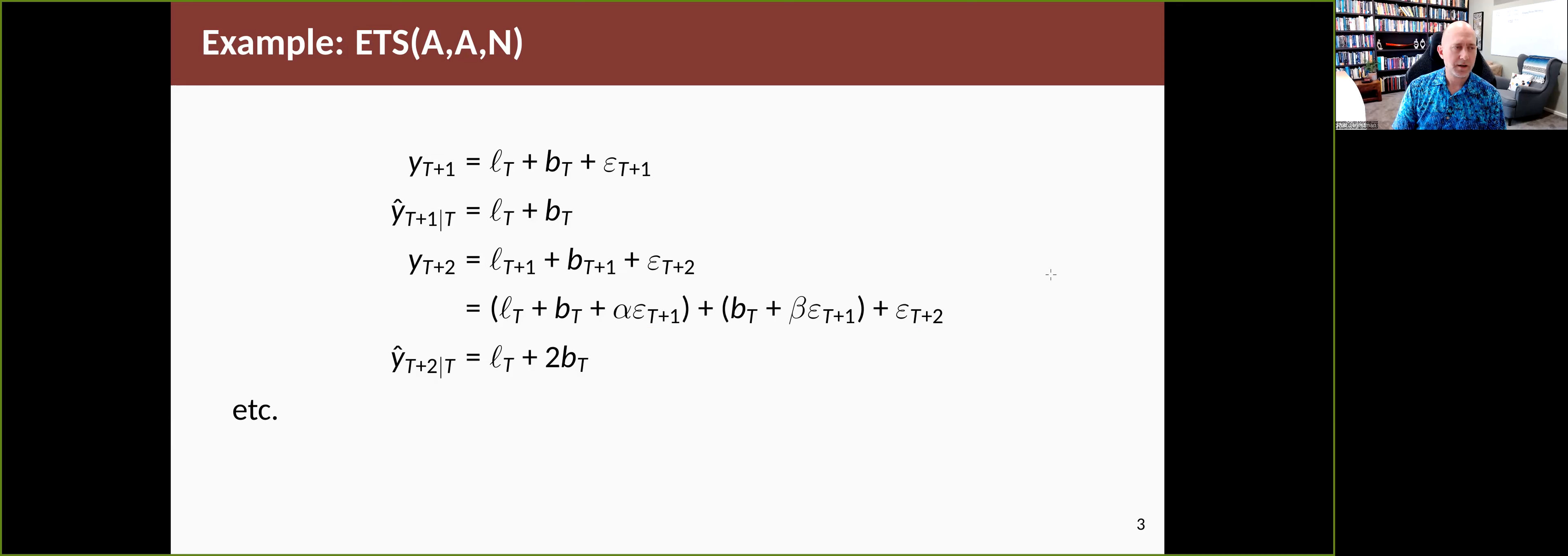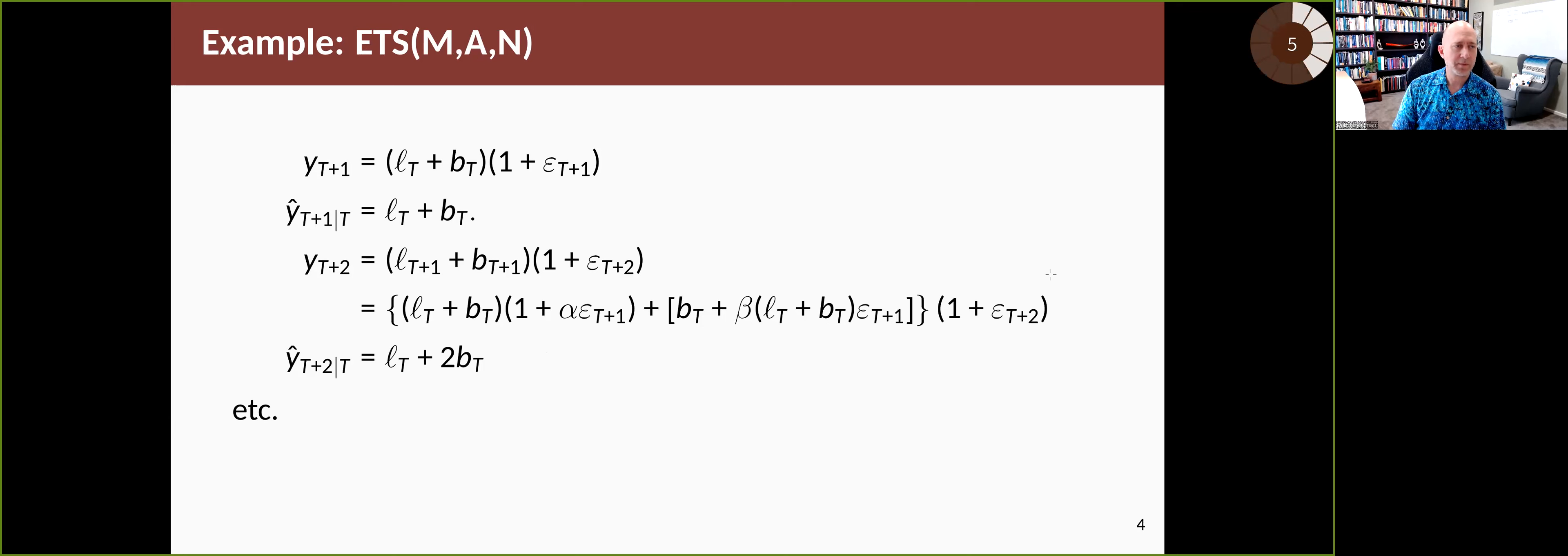That's with Holt's additive trend and additive error. If we had multiplicative error and additive trend, you do the same sort of calculation and we end up with an expression for one step ahead and for two steps ahead and so on, and you can iterate. This is tedious, so we can derive expressions for the means and variances for all of these types of models.